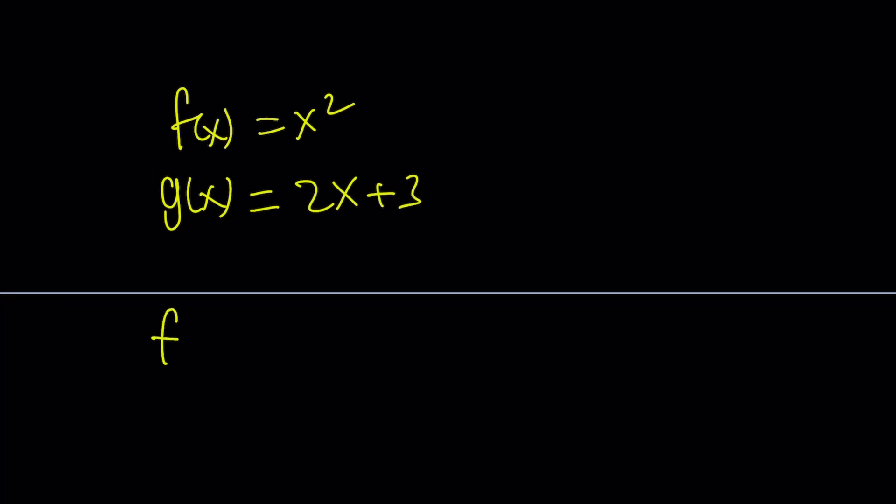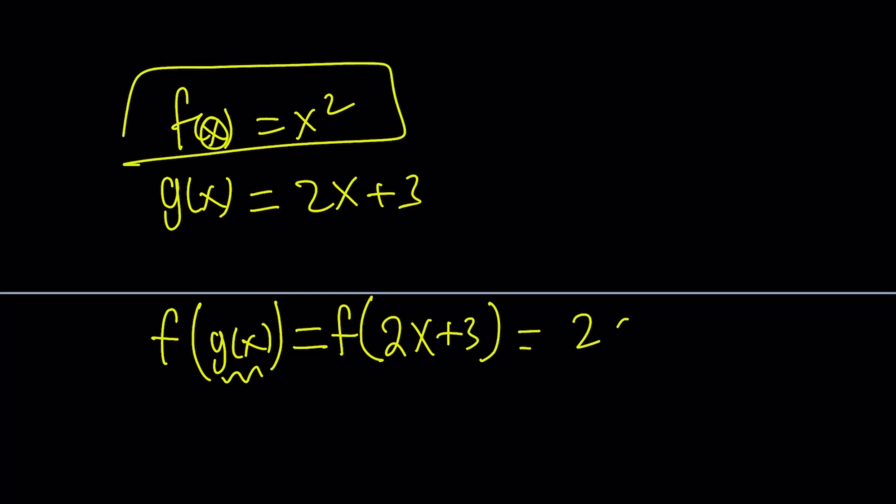And when you say something like f of g of x, we're basically talking about replacing the x in f of x with g of x. In other words, f of g of x is the same thing as f of 2x plus 3, but f of x is x squared. So that would be 2x plus 3 squared.